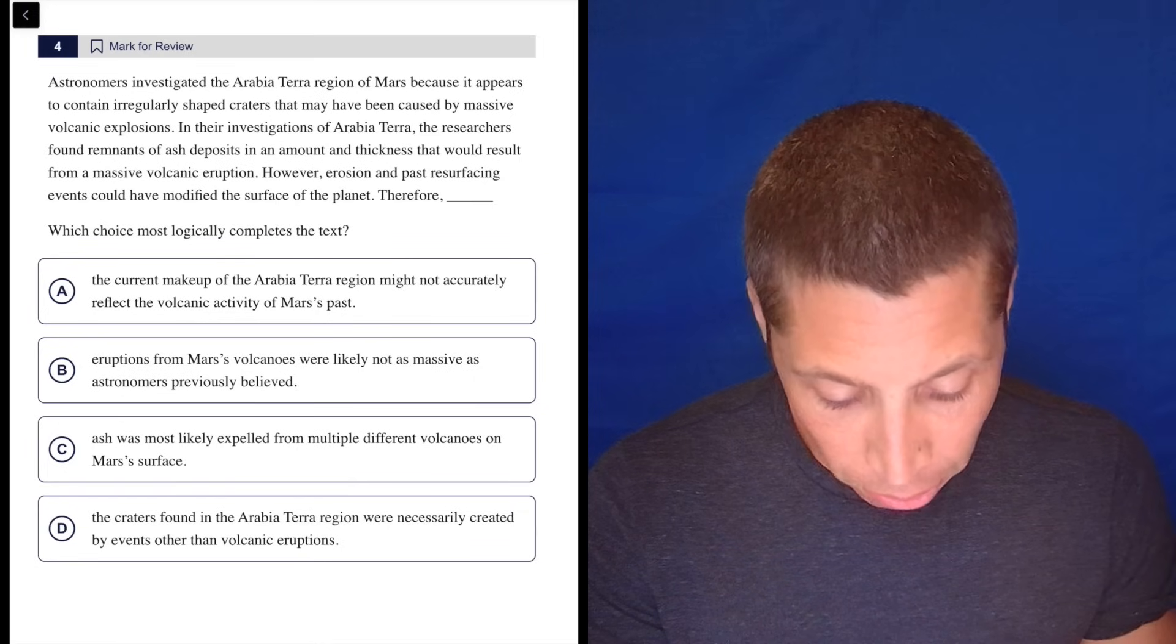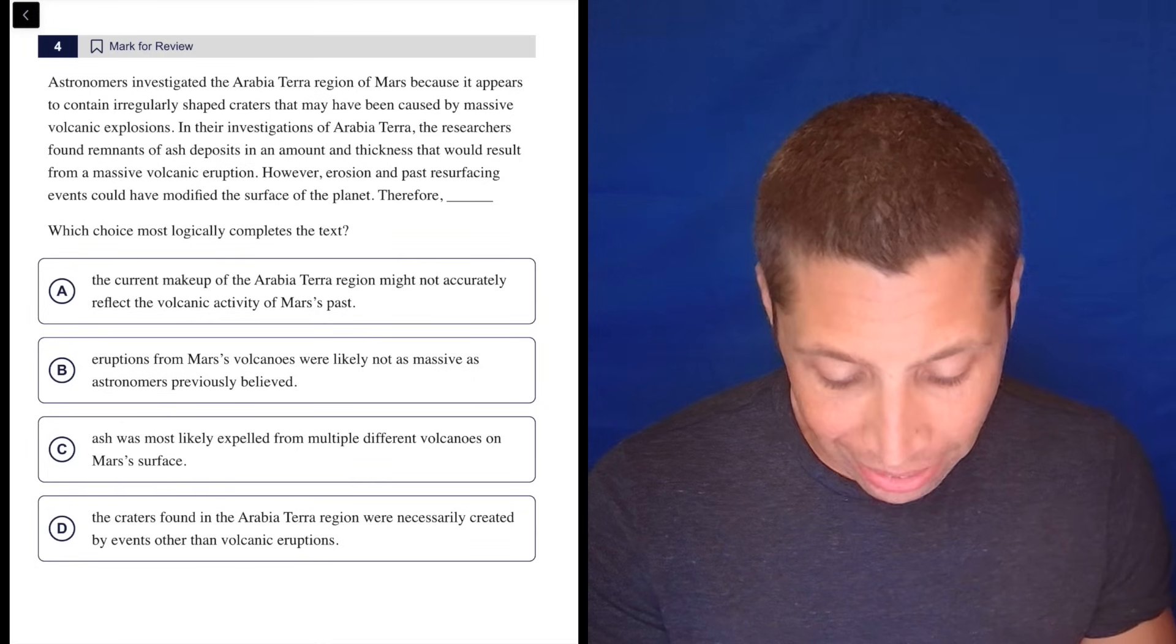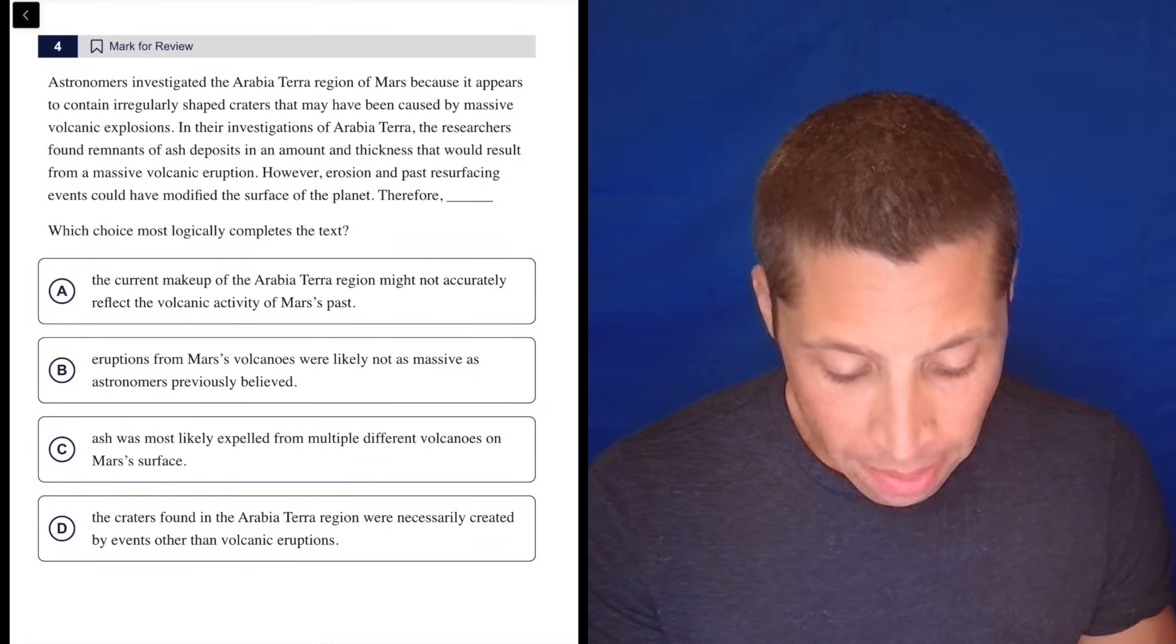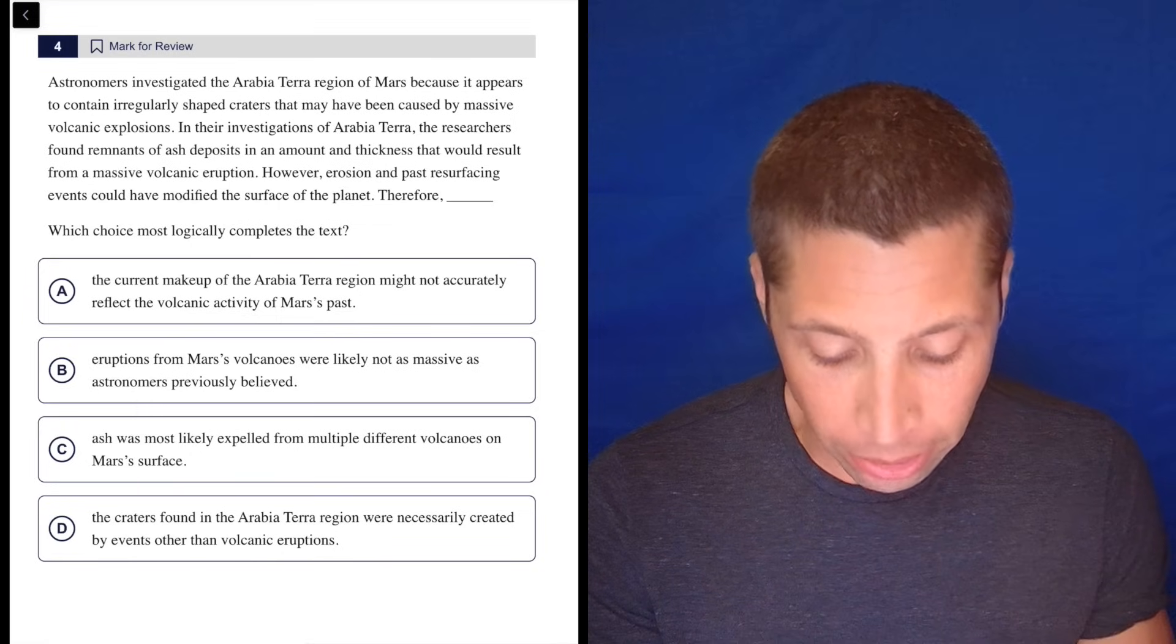Astronomers investigated the Arabia Terra region of Mars because it appears to contain irregularly shaped craters that may have been caused by massive volcanic explosions.